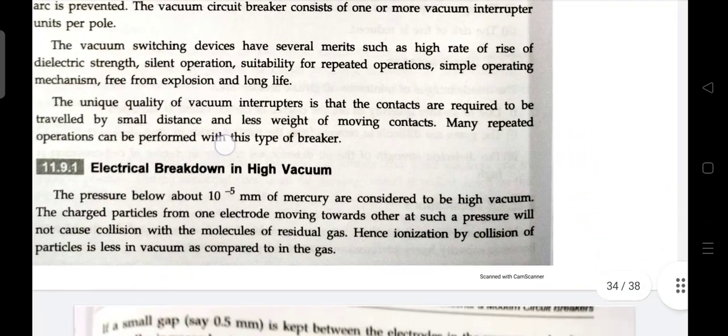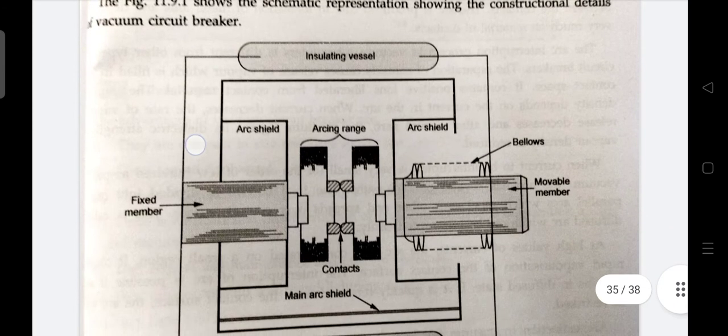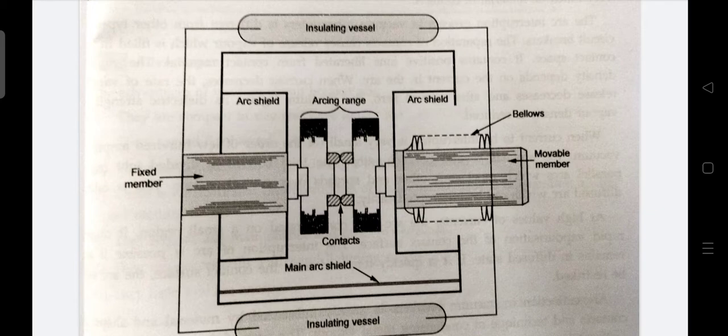Here the medium which we will use for arc extinguishing will be vacuum. In vacuum circuit breakers, the degree of vacuum being in the range from 10^-7 to 10^-5 torr is used as the arc quenching medium since vacuum offers the highest insulating strength. It possesses far superior arc quenching properties than any other medium.